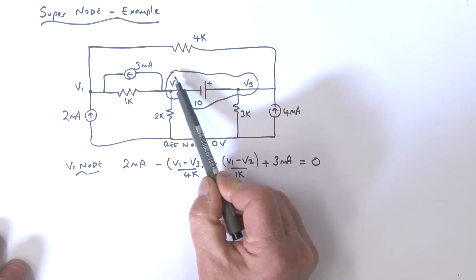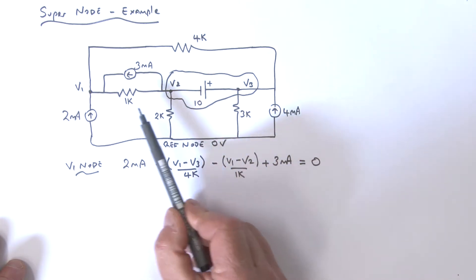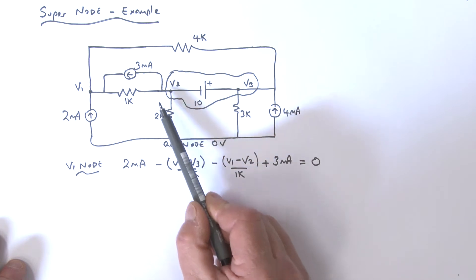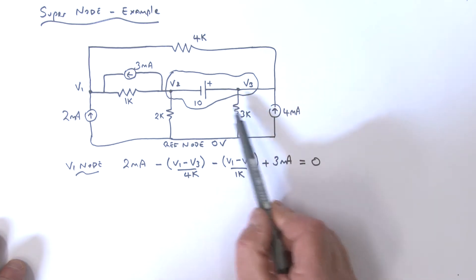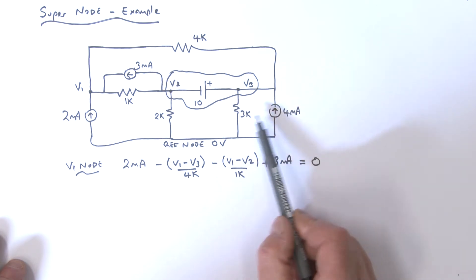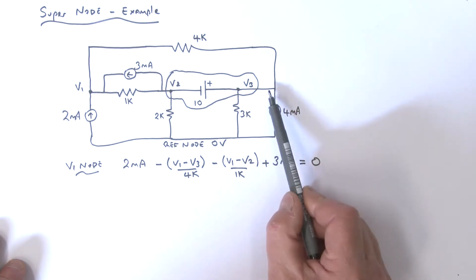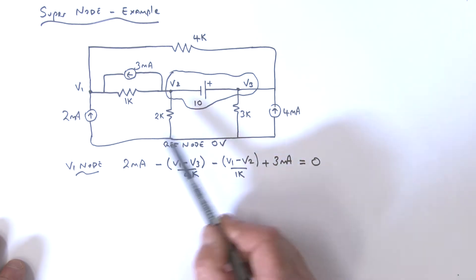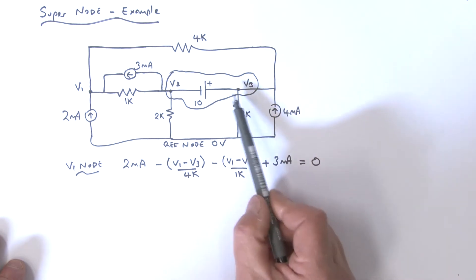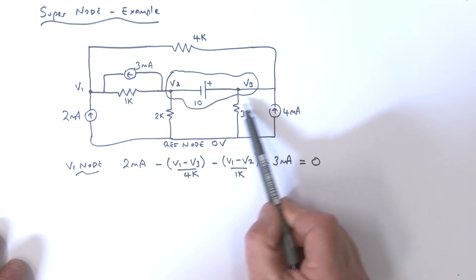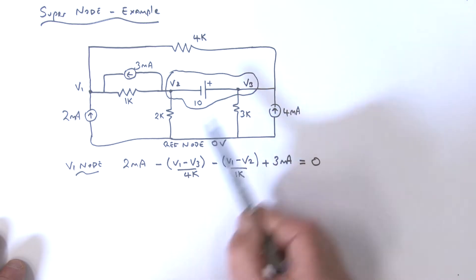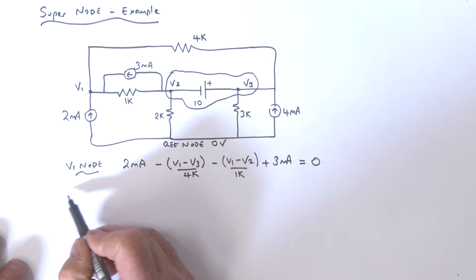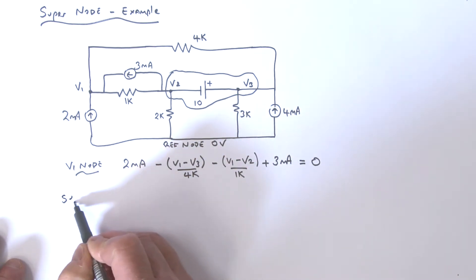We're going to treat this as a supernode and consider what currents are going in and what are going out with respect to what I've circled as that supernode.